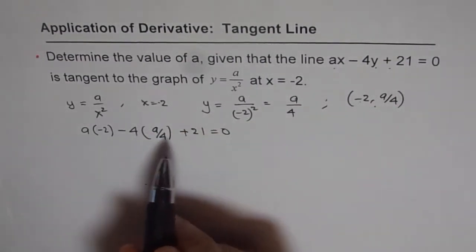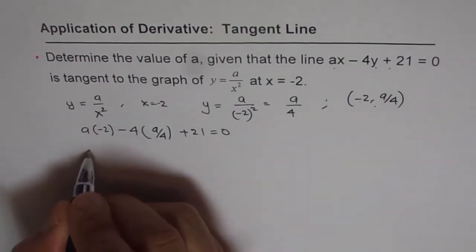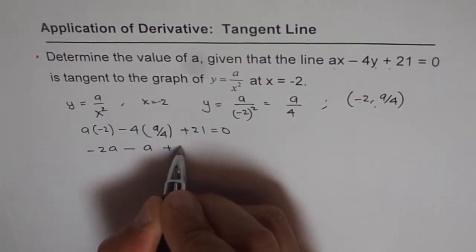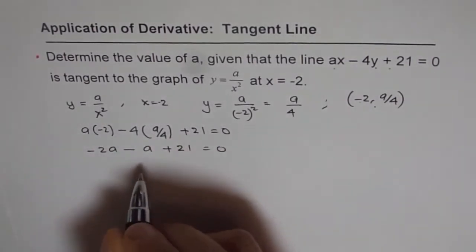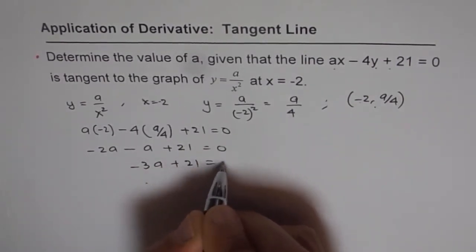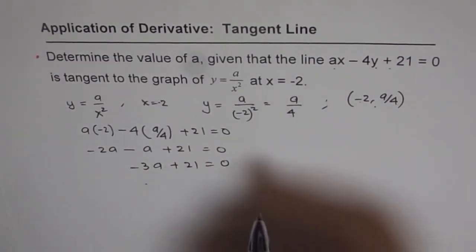So from this, we have an equation in A and we can solve for A. We get minus 2A minus A plus 21 equals 0. So this is minus 3A plus 21 equals 0. So we can solve this for A now.